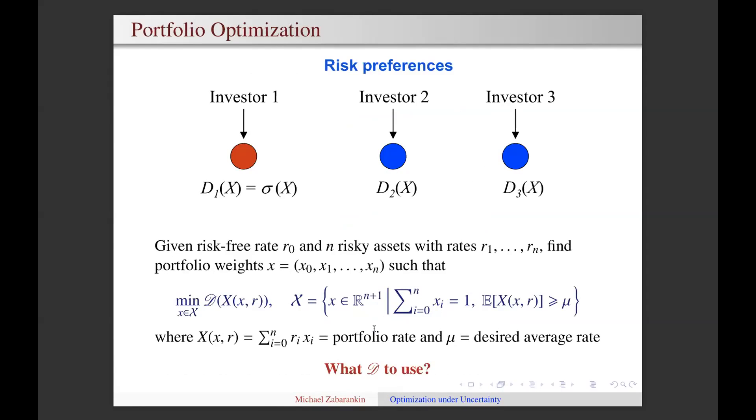Suppose there's a risk-free asset with the rate of return R0 and there are N risky assets with rates of return R1, R2, and so on, RN. Let X0, X1, and so on, XN be proportions of the initial capital invested into the risk-free asset and into N risky assets respectively. In this case, X0, X1, and so on, XN are called portfolio weights.